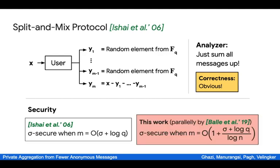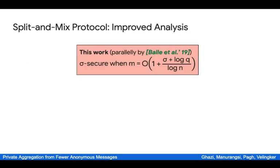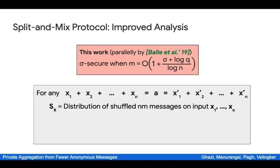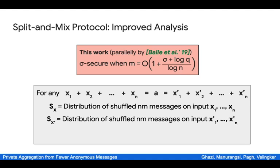Here we show that we can take m to be smaller by roughly a factor of log n, so it suffices to take m to be sigma plus log q over log n. To prove this, we follow the definition of security: we consider any pair of inputs x_1 to x_n and x_1' to x_n' whose sums are equal, denoting their common sum by a. Let S_x be the distribution of messages after shuffling on input x_1 to x_n. Our goal is to show that the total variation distance between S_x and S_x' is small.